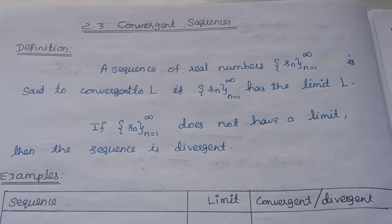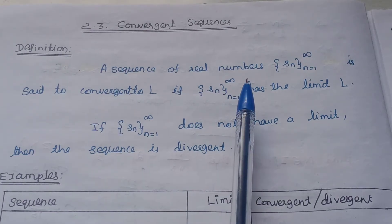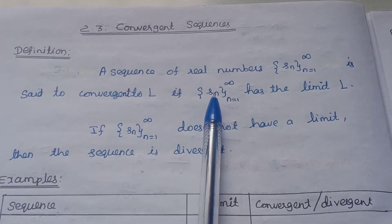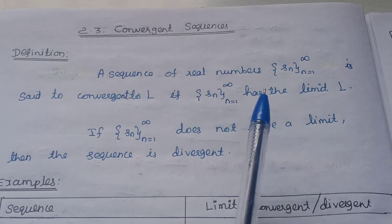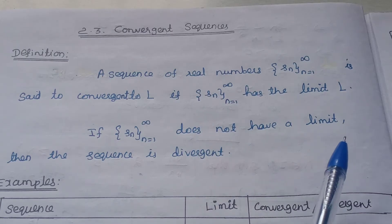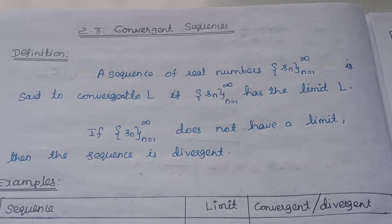We will see the real analysis sequence in the second unit. Let's look at the convergent sequence section and see the definition. A sequence of real numbers is said to be convergent to L if the sequence Sn has the limit L. As n tends to infinity and Sn approaches L, we say the sequence has the limit L. If a sequence has a limit, we call it a convergent sequence.